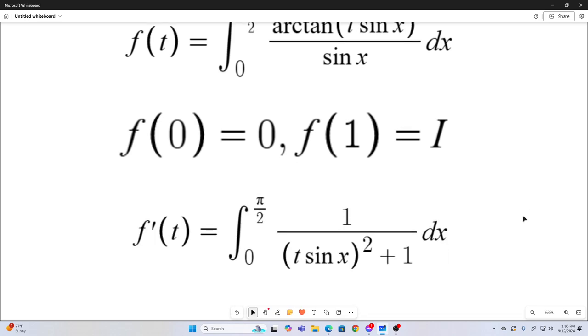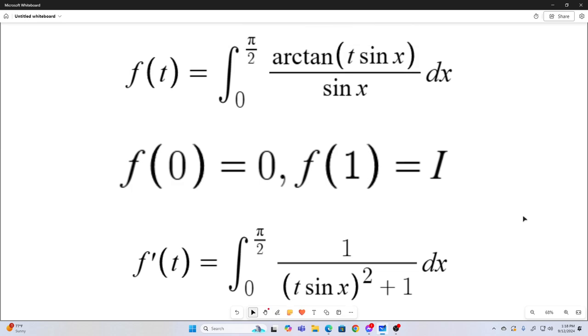Now we use the Leibniz rule for differentiation under the integral sign, just by taking the partial with respect to t of the integrand and leaving the rest of it alone. So this is our f prime of t. This is the derivative of this with respect to t.